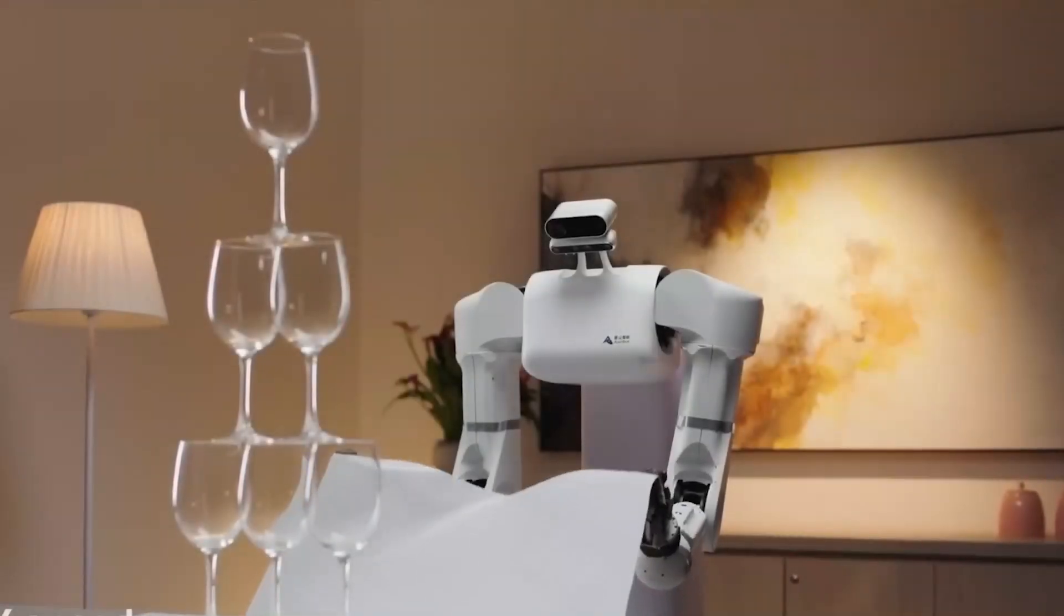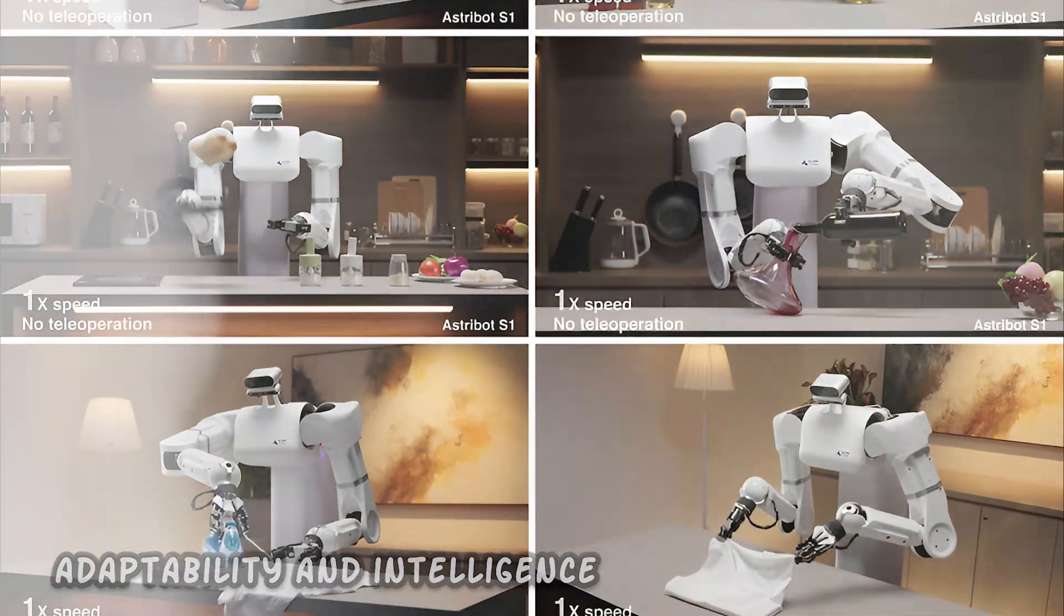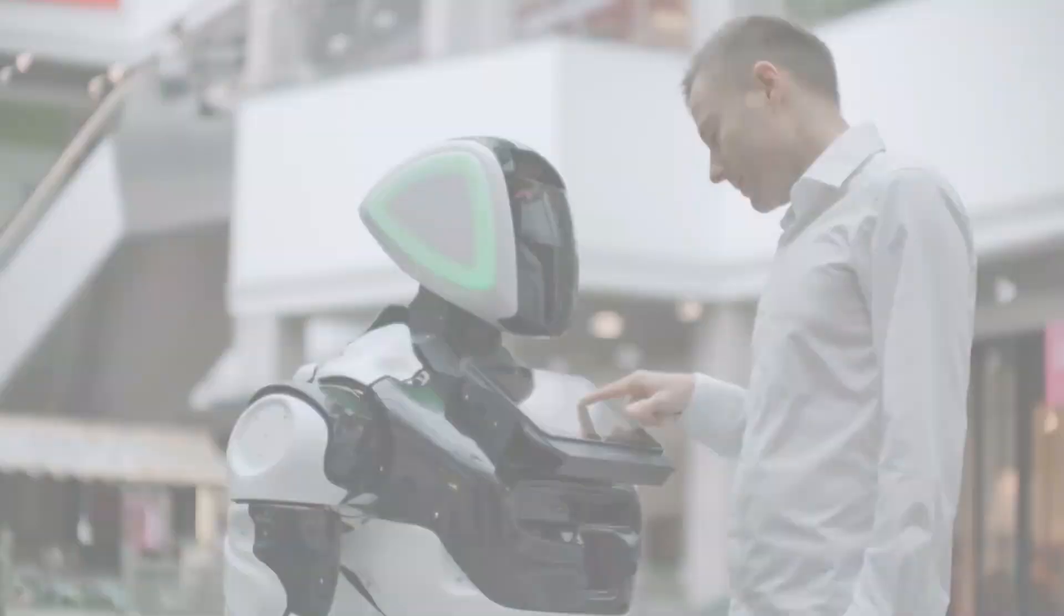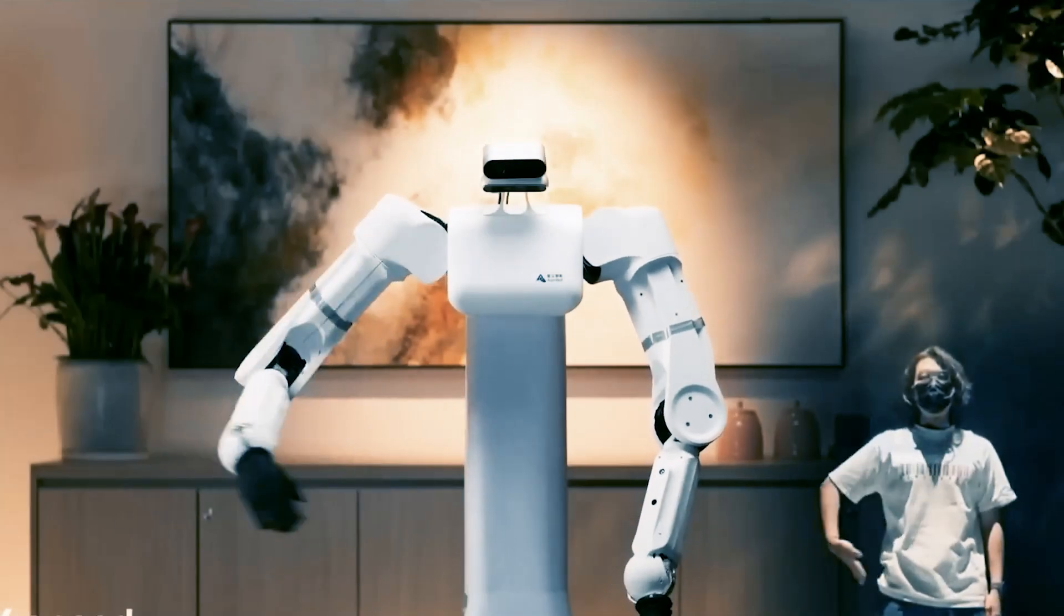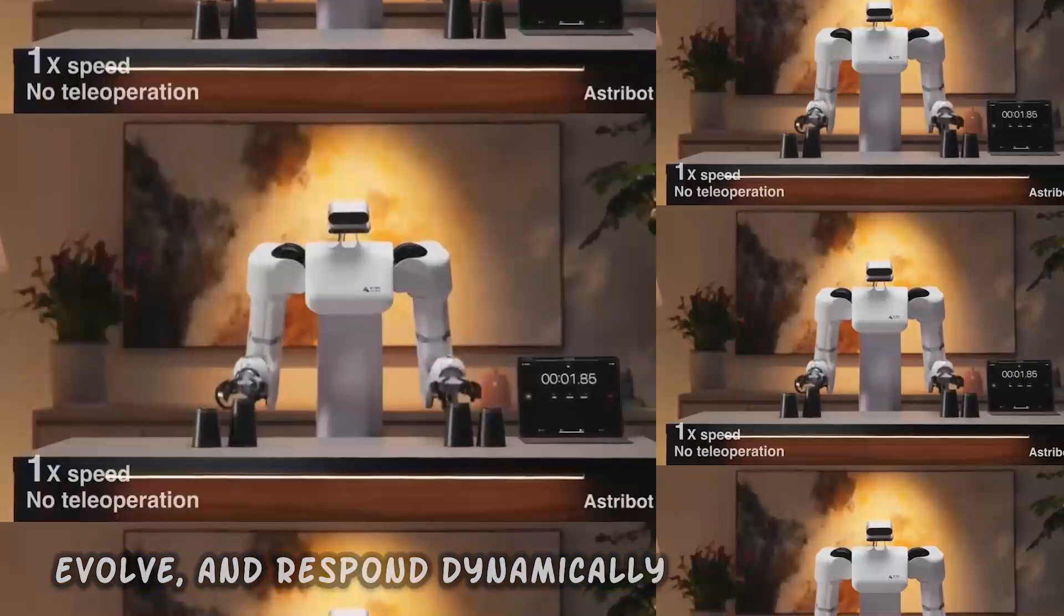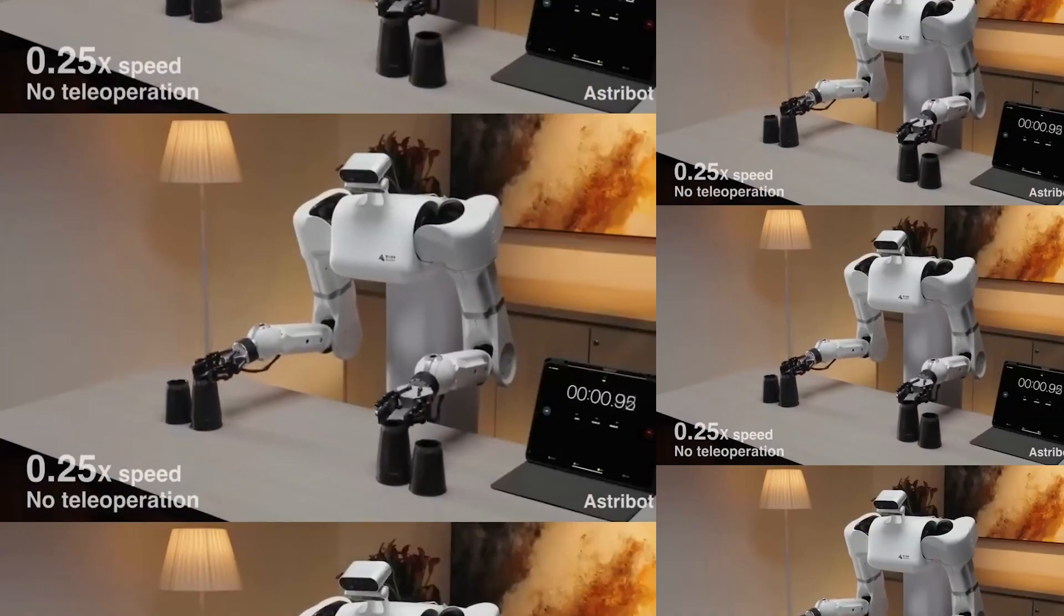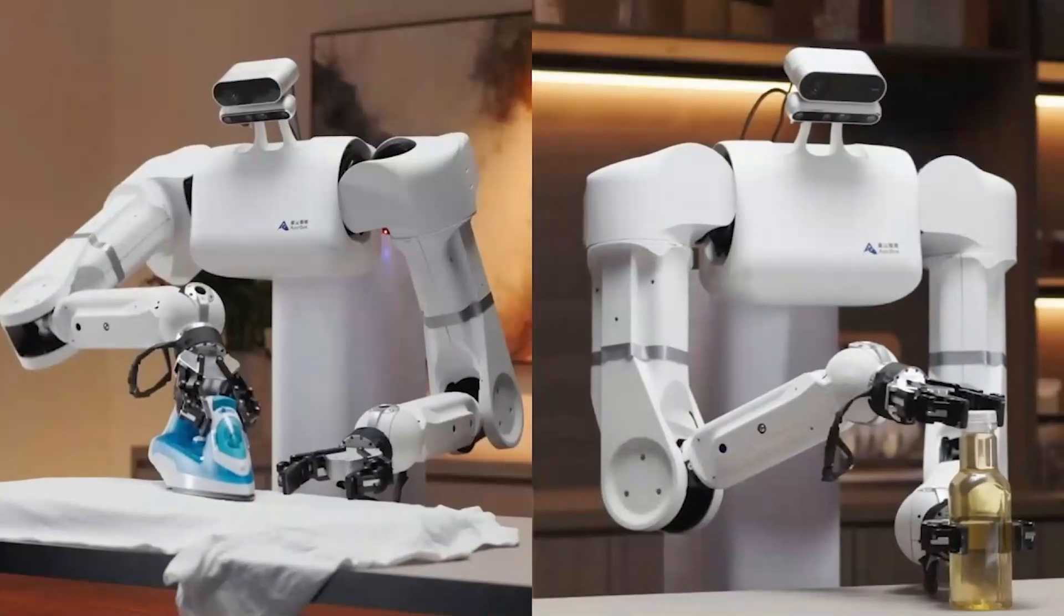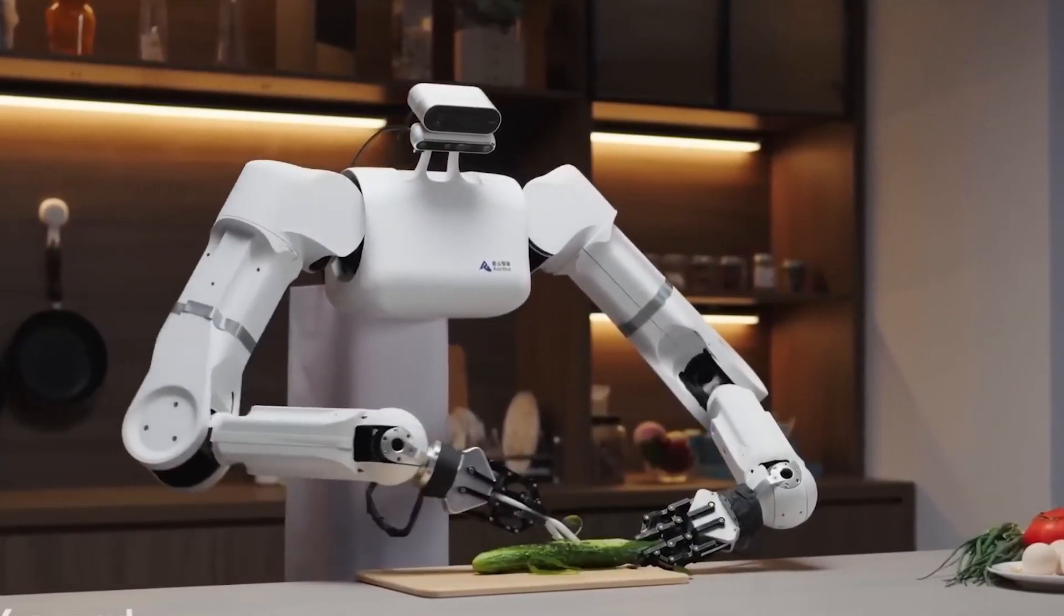What distinguishes Astrobot S1 is its unparalleled adaptability and intelligence. Traditional robots often operate within narrow parameters, restricted by predefined instructions. In contrast, Astrobot S1 demonstrates an ability to learn, evolve, and respond dynamically to diverse environments and challenges. Its adaptability enables it to navigate complex scenarios with agility and precision, making it a versatile asset across various domains.